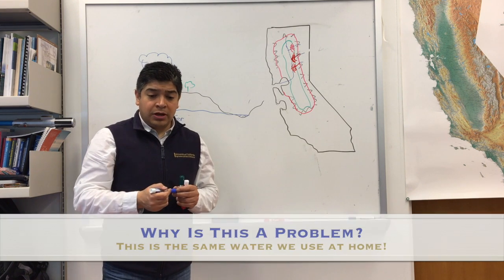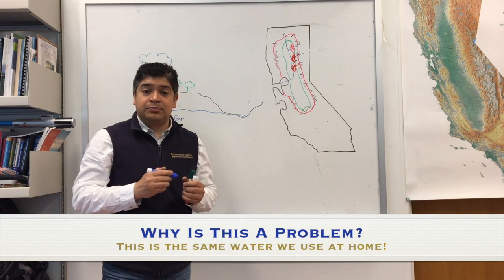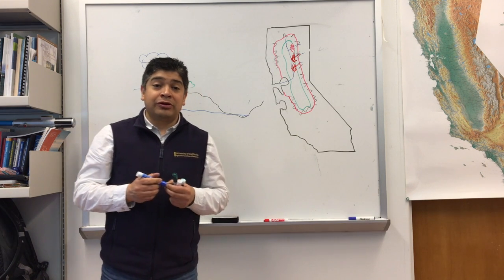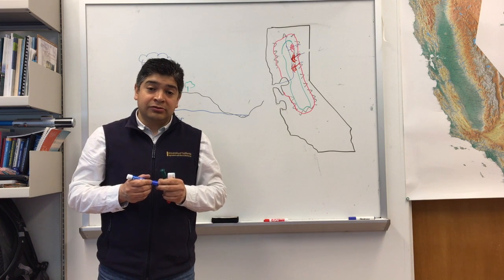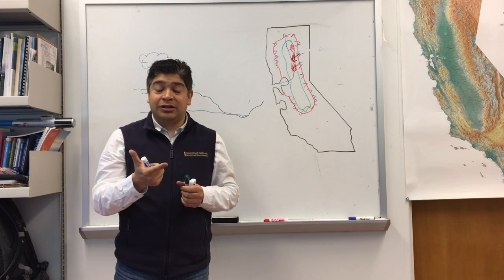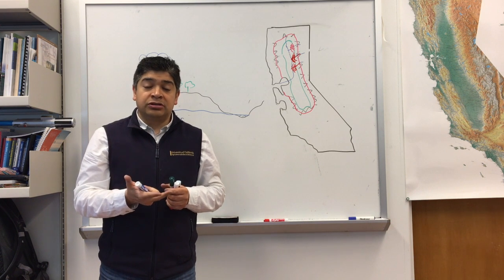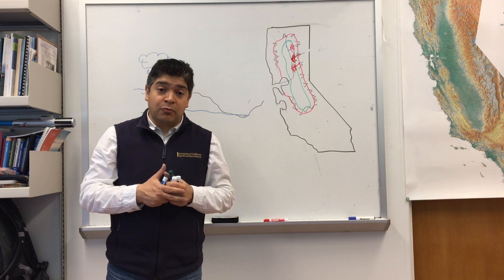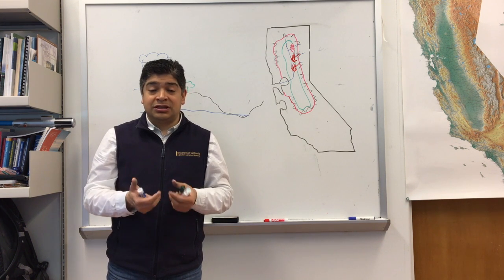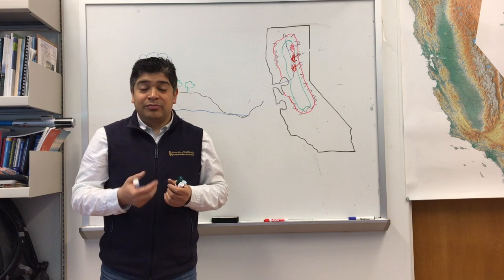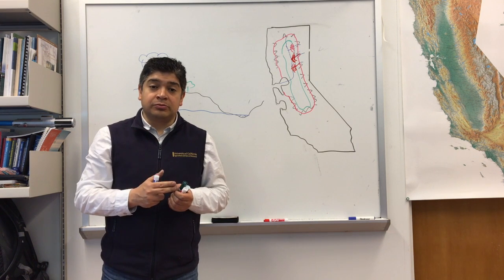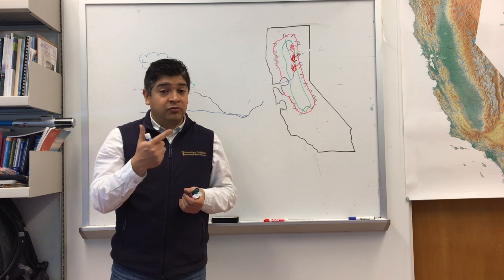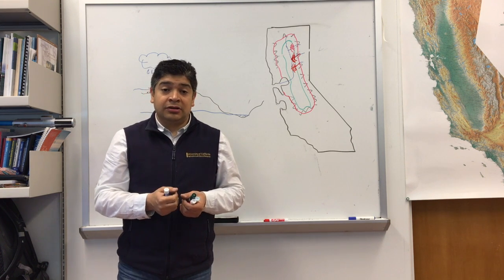Why is it important that we keep these pesticides out of the aquifers, out of the groundwater? The water coming out of the tap in your house — the water that you're drinking, taking a shower with, using for cooking — usually, in cities, comes out of the groundwater. So it's very important to keep pesticides out of the groundwater, because that's the water that is reaching our homes. That's why it's important to keep pesticides from our backyard and from our fields out of the groundwater.